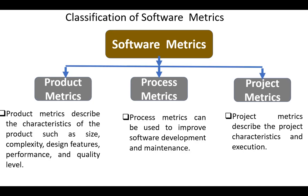Process metrics can be used to improve software development and maintenance. Examples include the response time of the fix process, the pattern of testing defect arrival, the effectiveness of defect removal during development, and others.